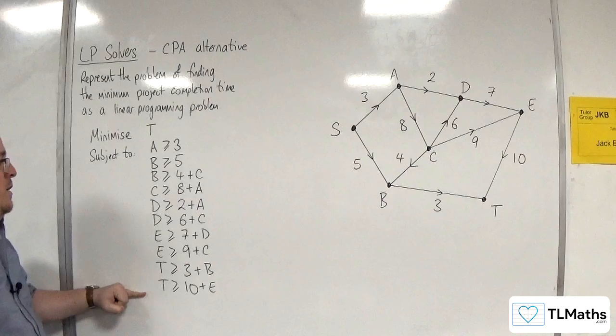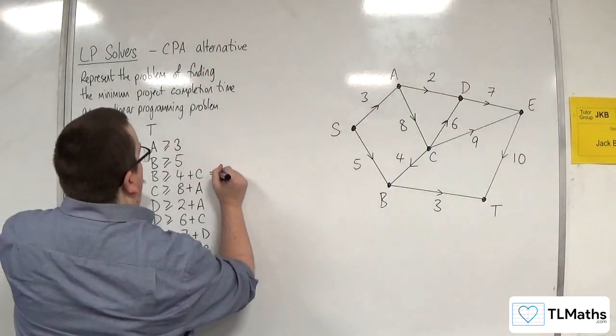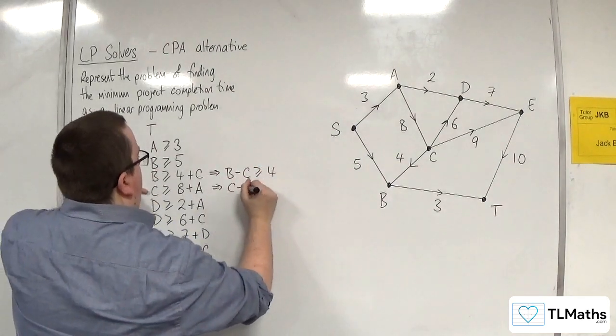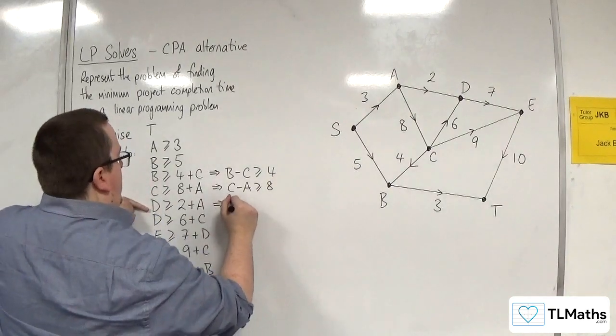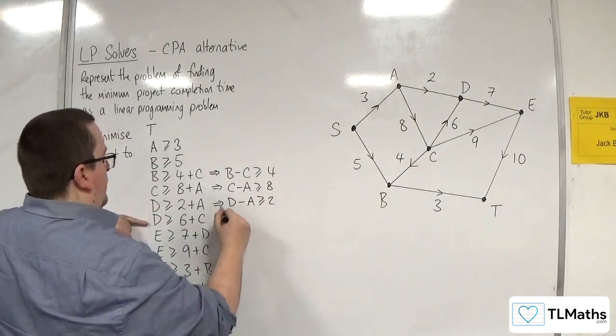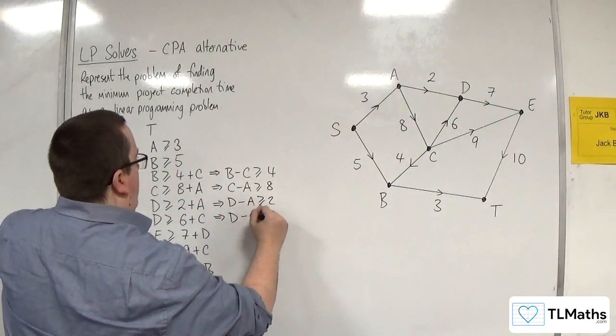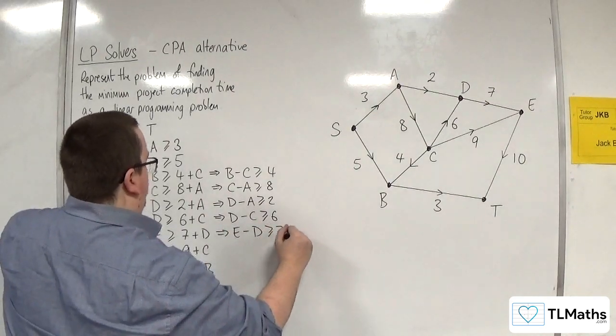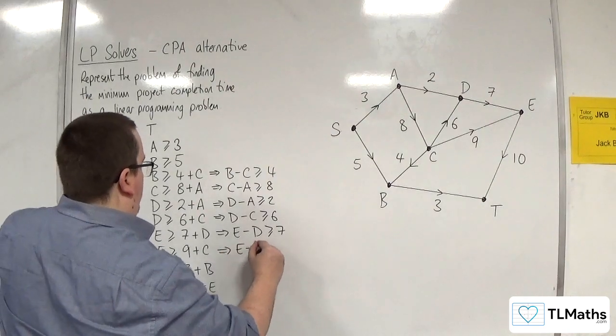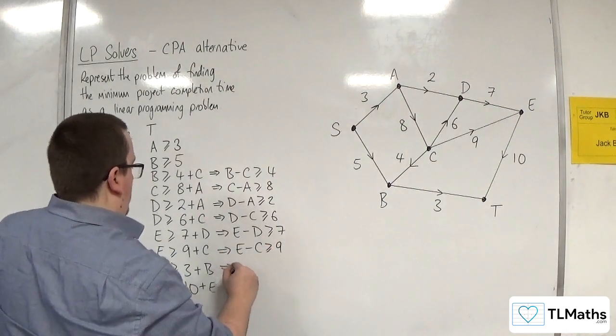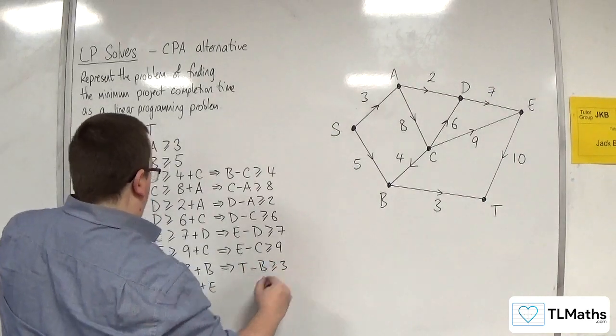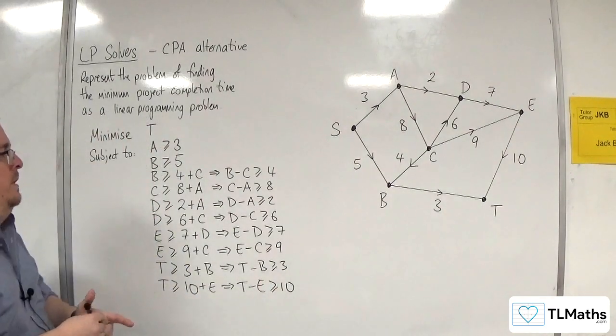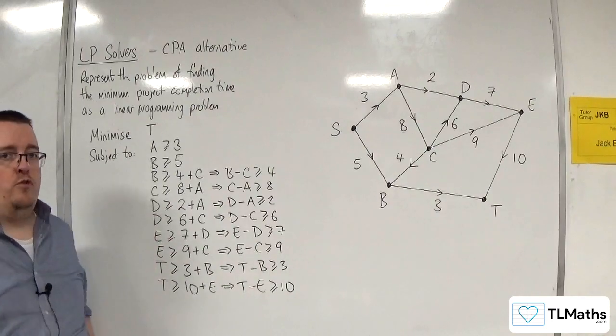Now these inequalities here are not written in standard form. So I would then rewrite these as B take away C is greater than or equal to 4, C take away A is greater than or equal to 8, D take away A is greater than or equal to 2, D take away C is greater than or equal to 6, E take away D is greater than or equal to 7, E take away C is greater than or equal to 9, T take away B is greater than or equal to 3, and T take away E is greater than or equal to 10. And so that is my linear programming problem.